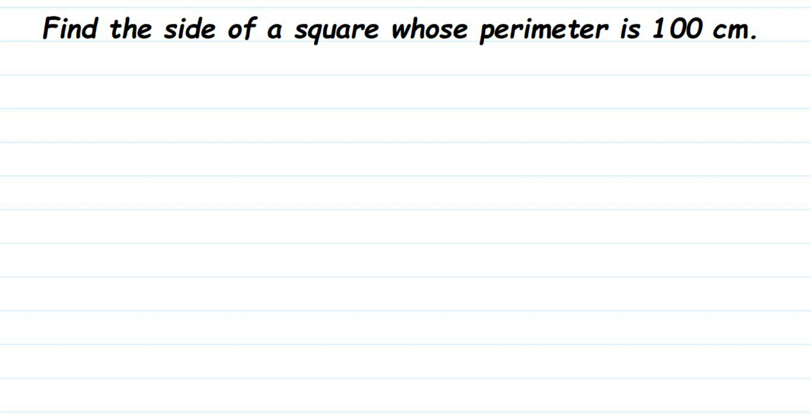Hello everyone, here is a question on square. The question is: find the side of a square whose perimeter is 100 centimeter. So here they have given the perimeter already, perimeter is 100 centimeter. Then what we have to find?